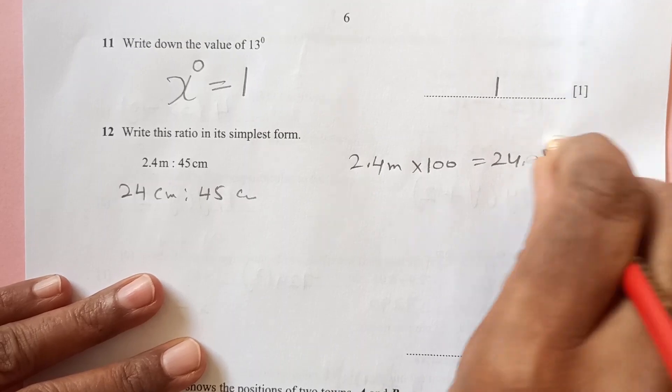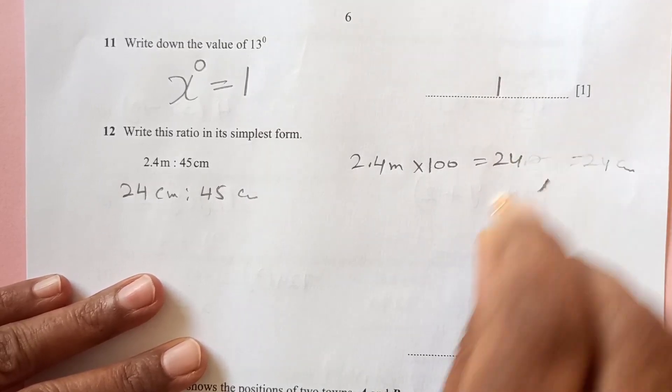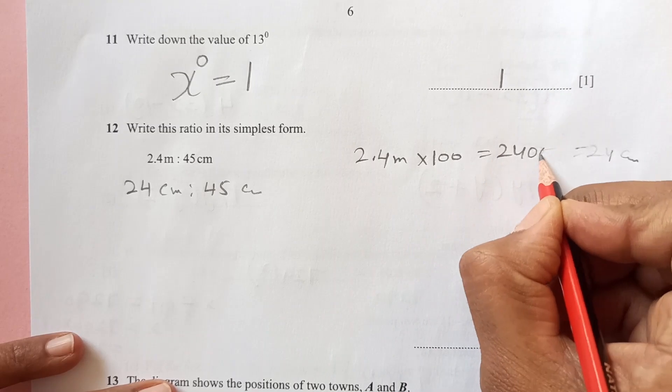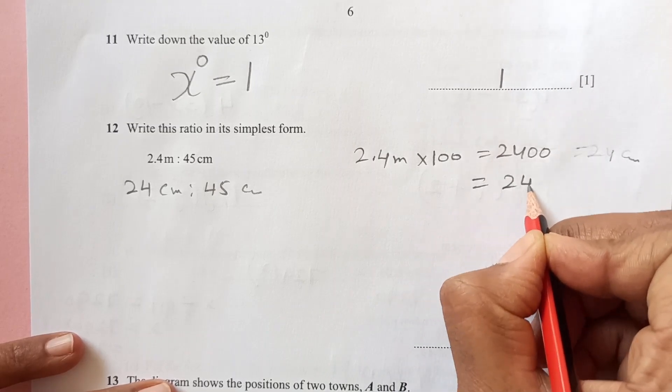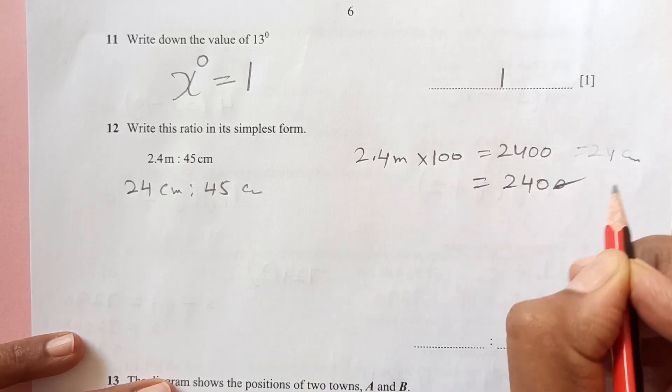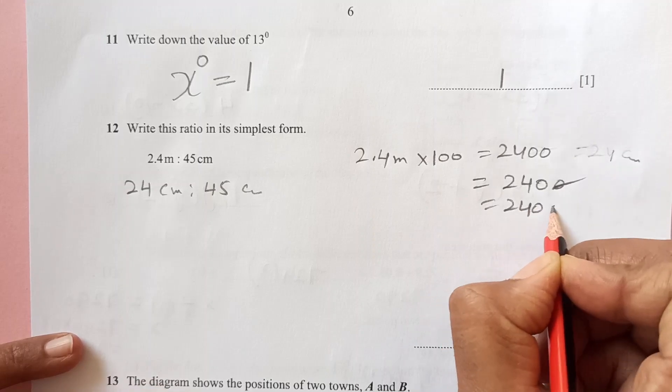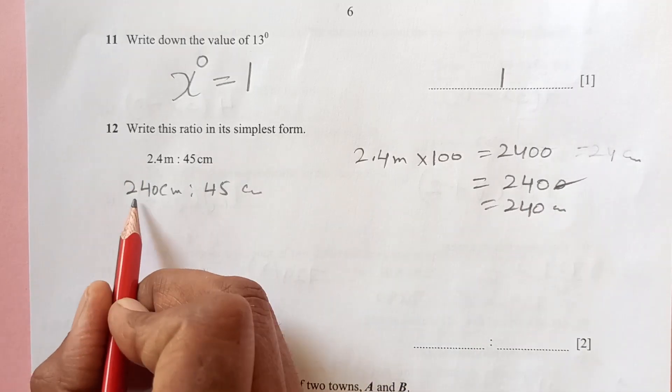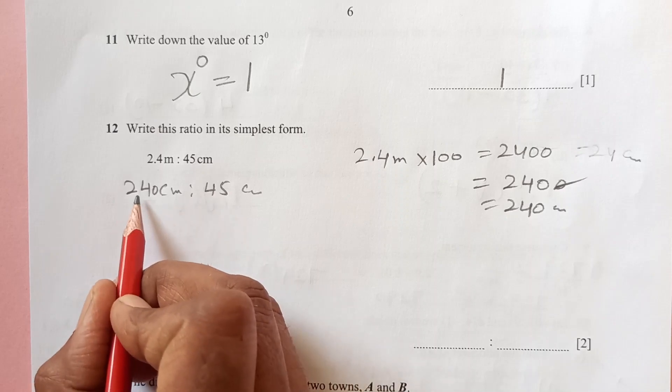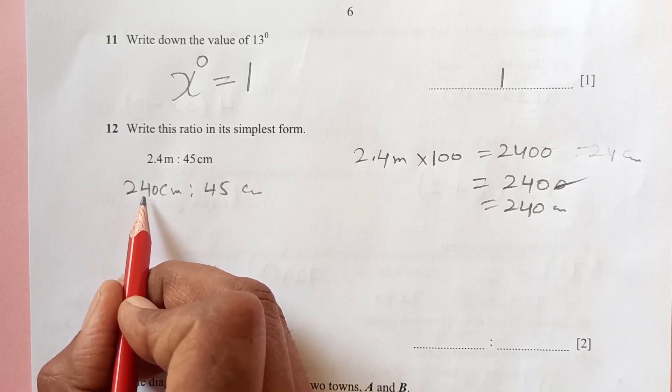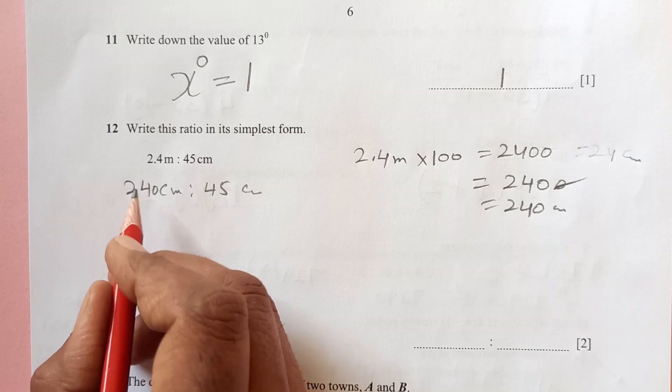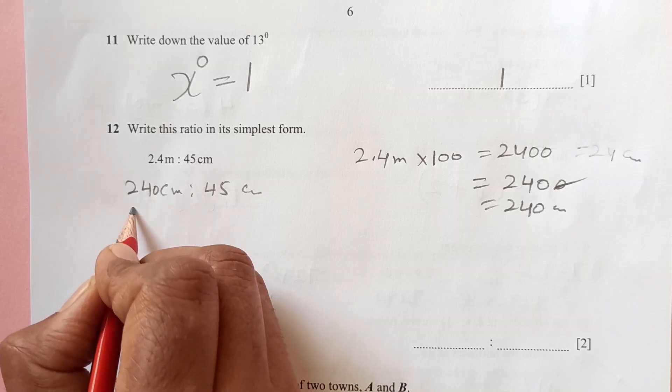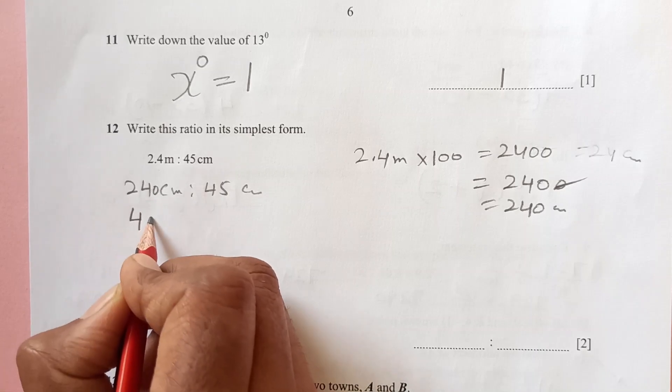Sorry guys, I think we have made a mistake here. When you multiply, there will be two zeros added here, two zeros, then this is 2400, then one decimal place, this is 240 centimeters. So here we are going to have 240 and add 0 more.